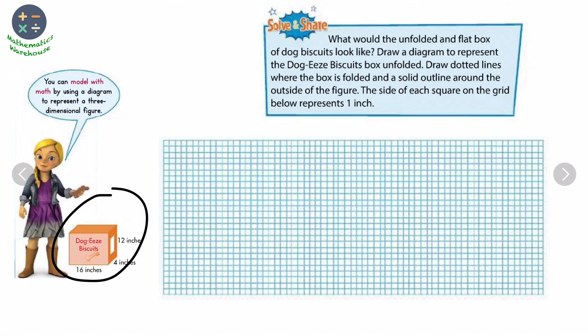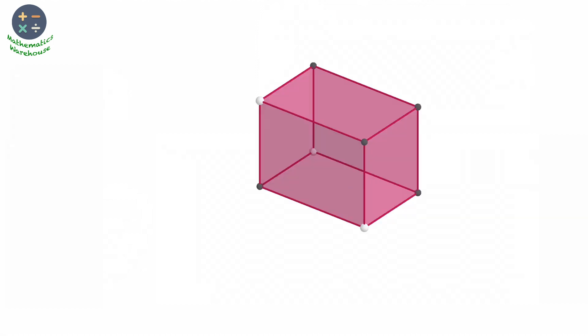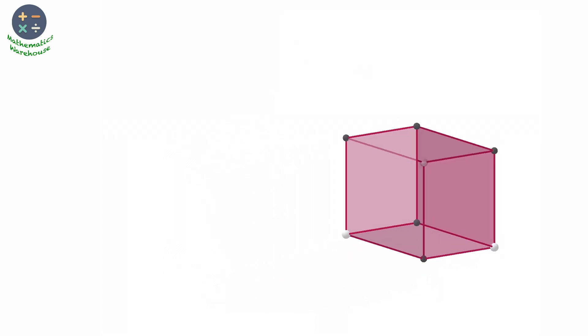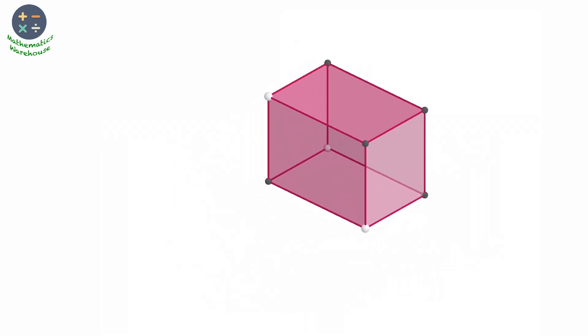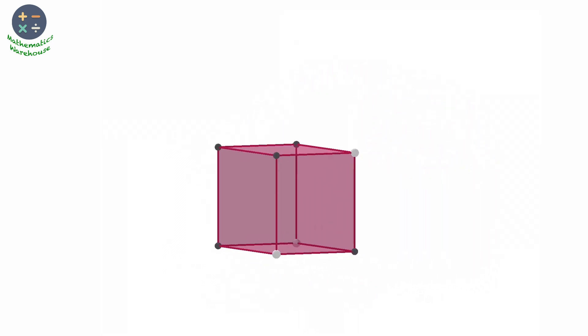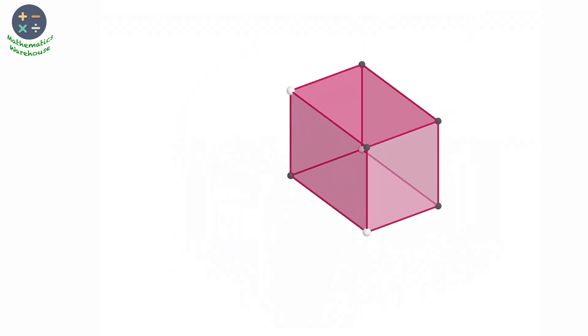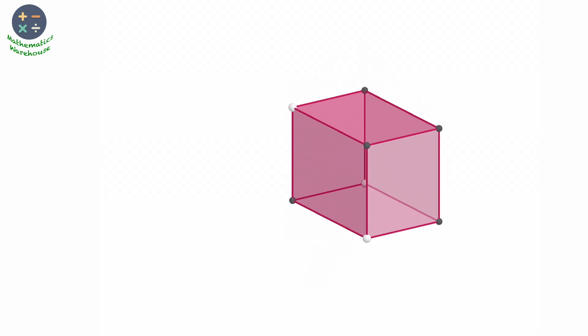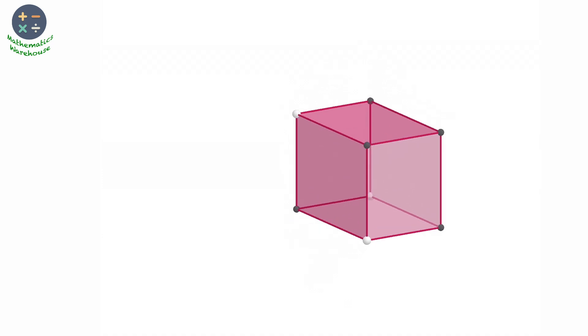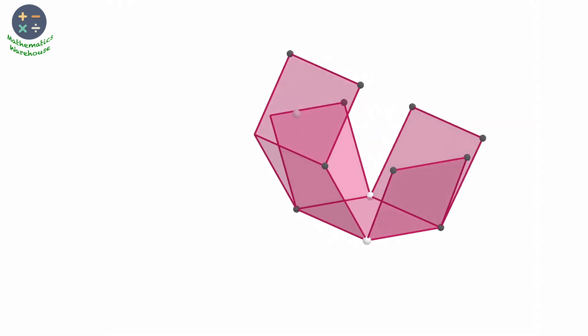The rectangular prism has six faces. This rectangular prism has six faces and we can count, we have four sided faces and we have two bases, one up, one down.